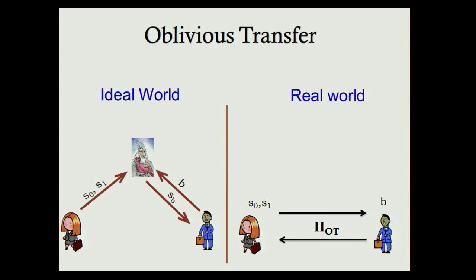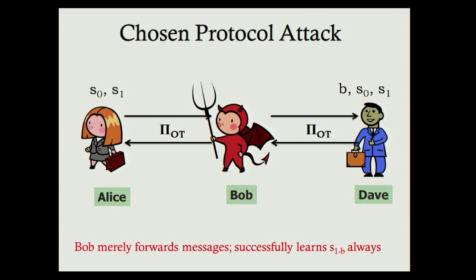I'm going to start with an attack on this protocol when it's run concurrently — known as the chosen protocol attack. Alice and Bob are our parties; Bob is the adversary. What Bob does is run a similar OT-like protocol with a third party Dave. All Bob does is forward all messages Alice sends to him on to Dave, and forward all messages Dave sends back to Alice. If they were both running pi_OT, Alice would not realize anything was going wrong.